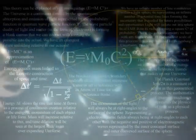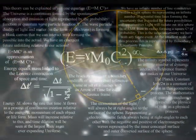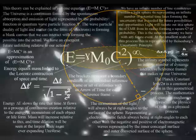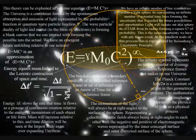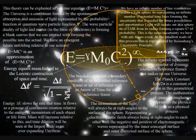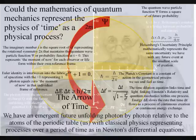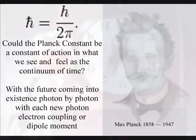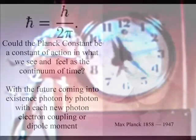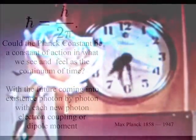It is because this process is universal that the Buddha was right by saying, if we could understand a single flower we can understand the whole universe. We have a universal interactive process with the wave particle duality of light and matter in the form of electrons forming a blank canvas that we can interact with, forming the possible into the actual. At the smallest scale this is represented by the Planck constant being a constant of action in the geometrical process that we see and feel as the passage of time.